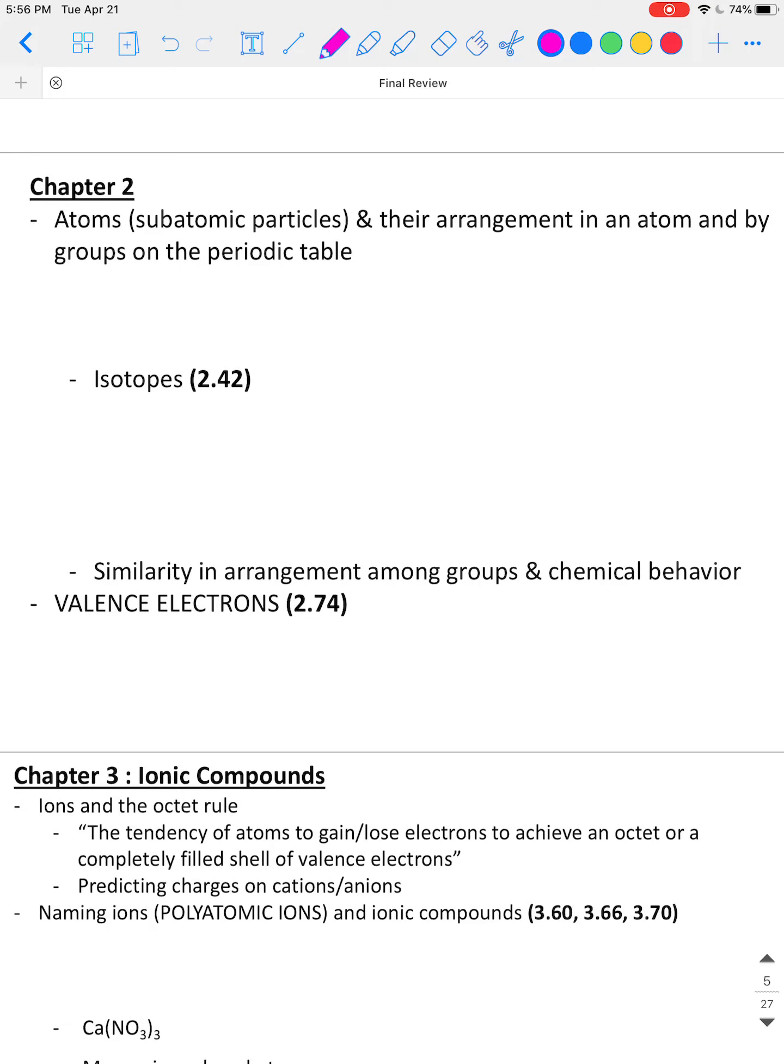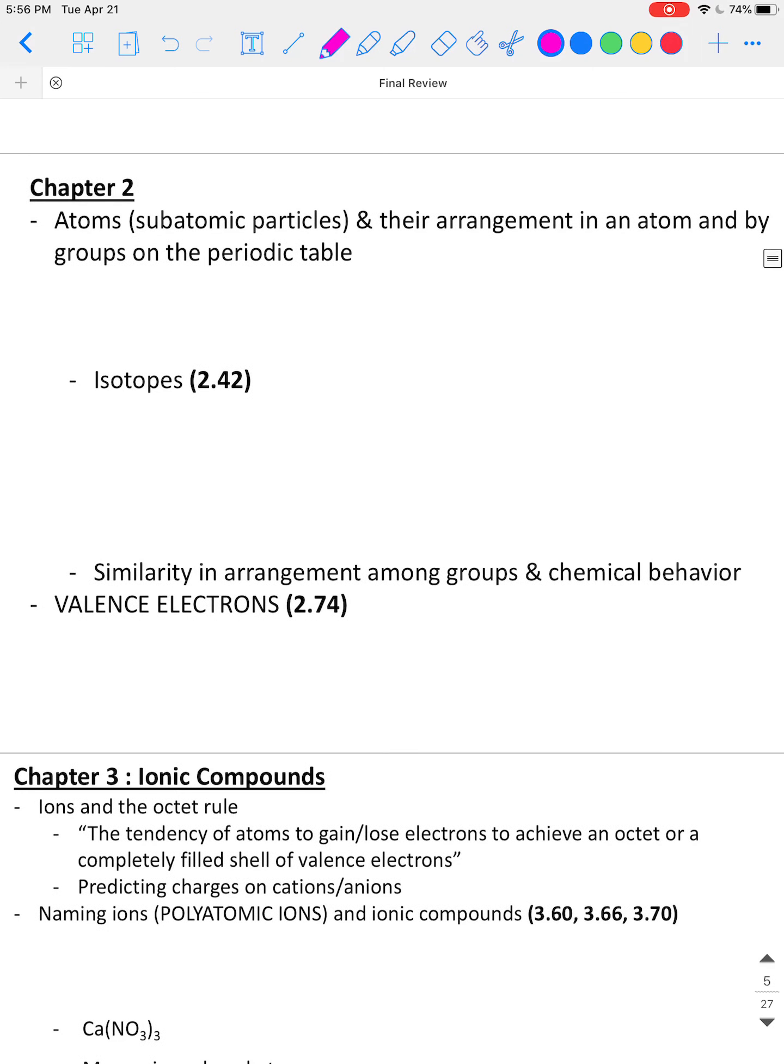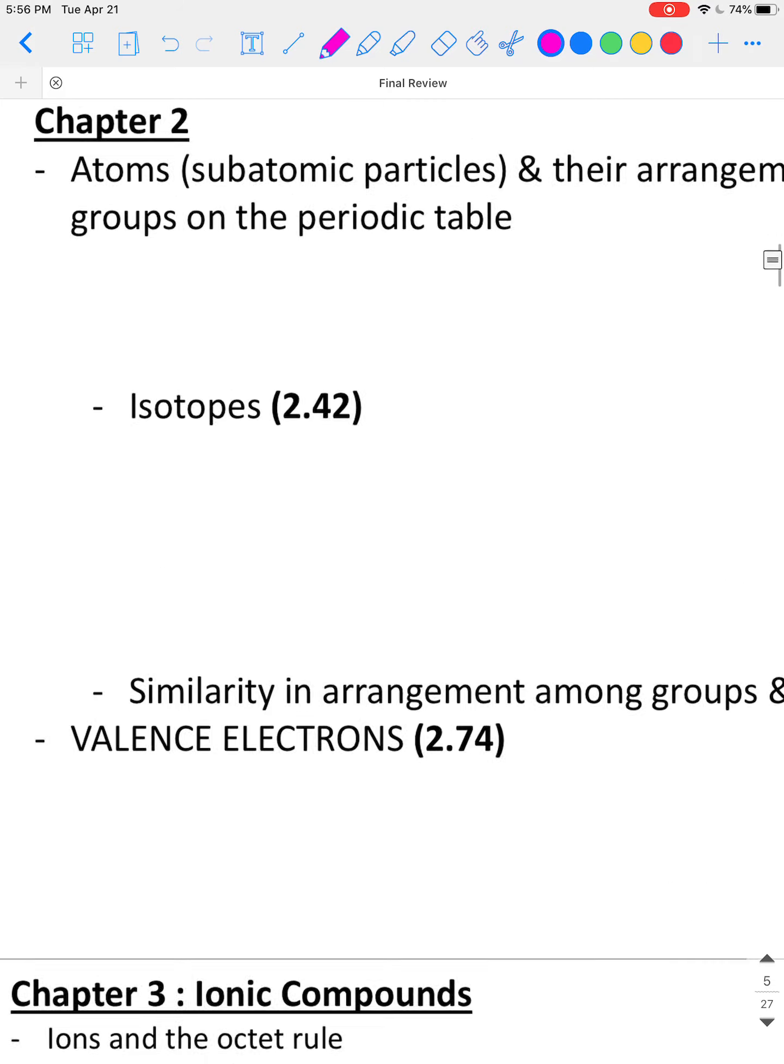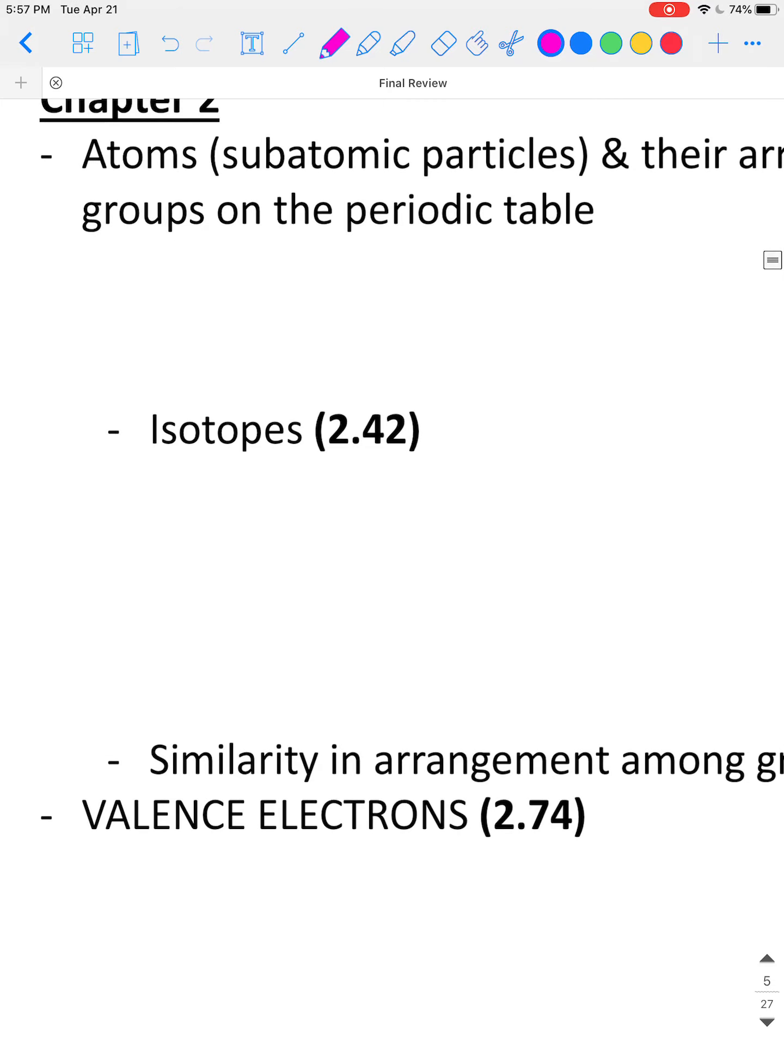So those were the big topics from chapter 1. Chapter 2, we definitely need to know atoms, the subatomic particles, and their arrangement in an atom. And we need to understand how that affects groups on the periodic table.